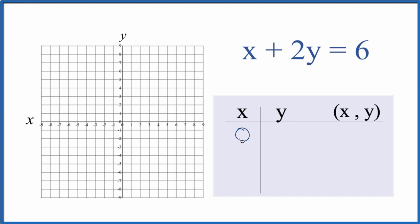I always like to start out with 0. So if x is 0, that just means that 2y equals 6. Divide both by 2. Y equals 6 over 2. That's 3. That's our first point.